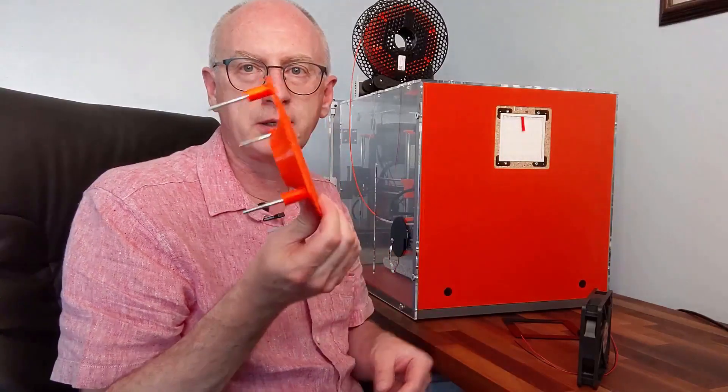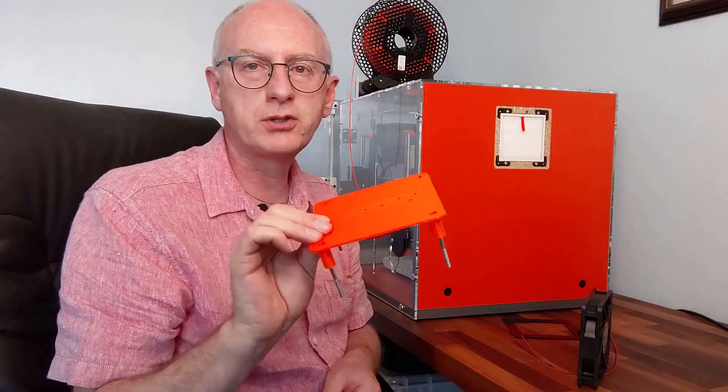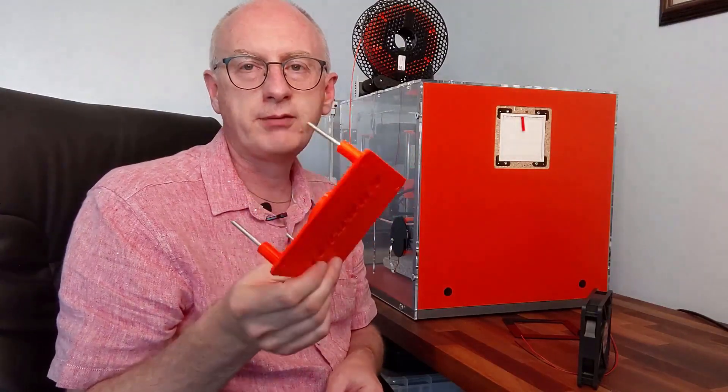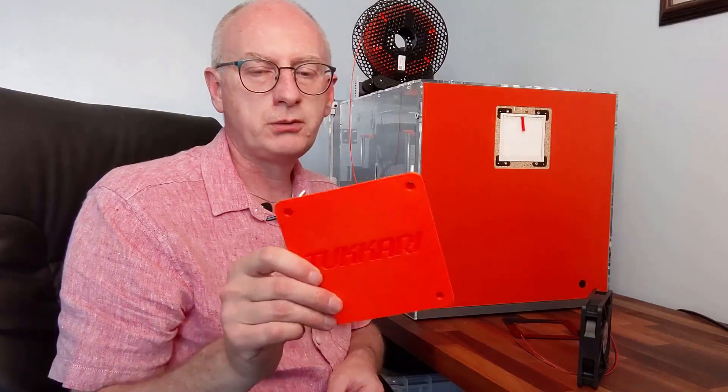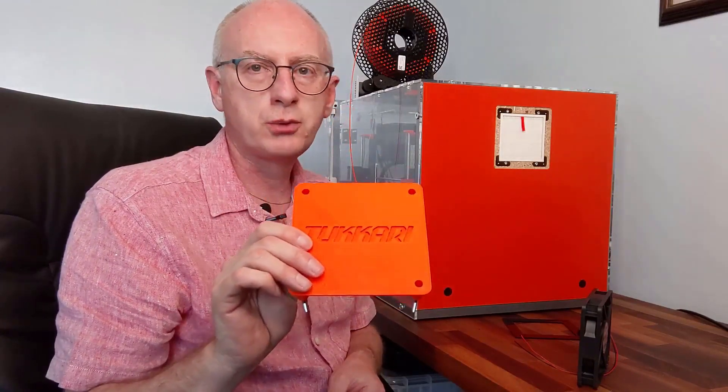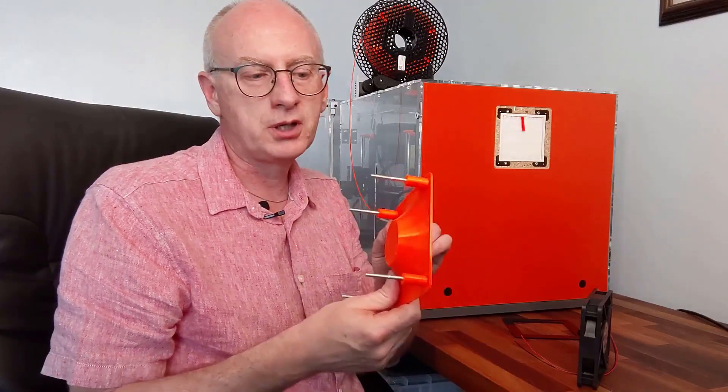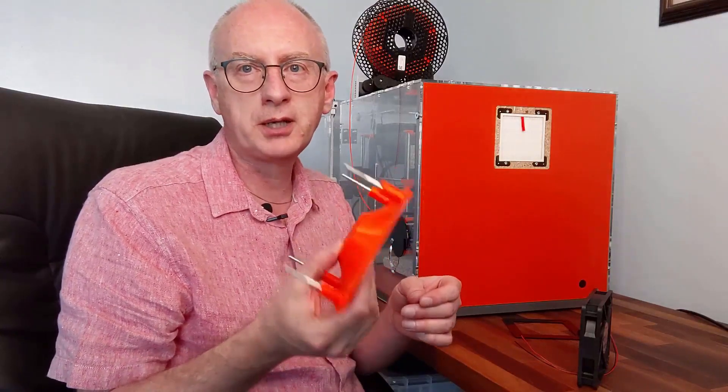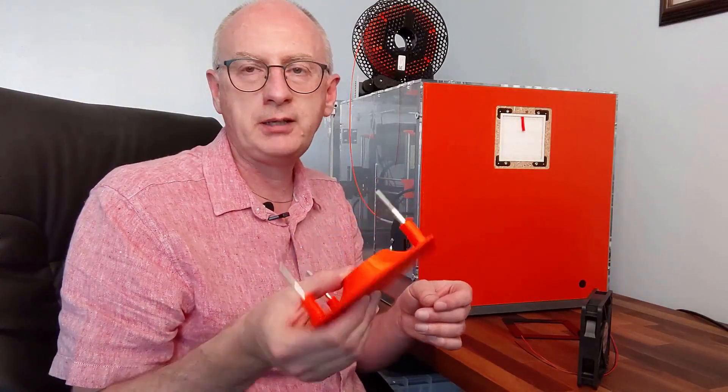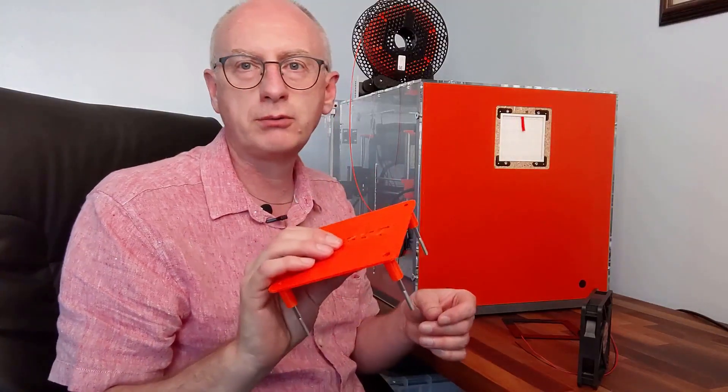I will leave a link to this if you're interested. It'll be on Thingiverse and Prusa models, so feel free to print that should you wish to. As far as the material goes, I've done this in the Prusa orange PETG, but I would have probably used PLA. I just didn't have any PLA that I liked the color of to hand, so I've just used the hot orange PETG.